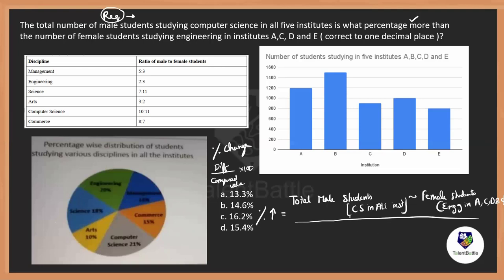There are people who might think the first one and people who might think the second one, but whatever it is compared to, we take that in the denominator. Here's a shortcut: whatever the terminology comes after 'than' — that's the second part — you take that in the denominator. So that says the female students in the engineering department in institutes A, C, D, and E are the parameters in the denominator.